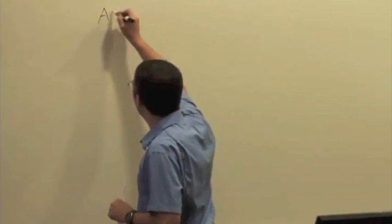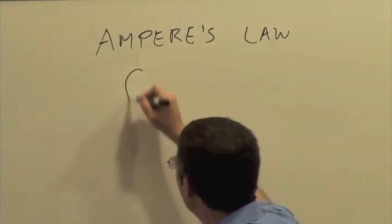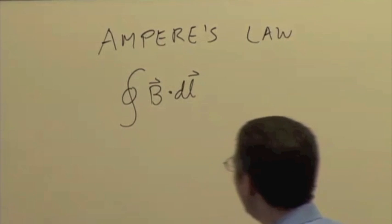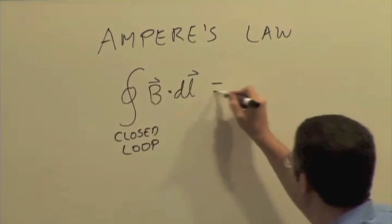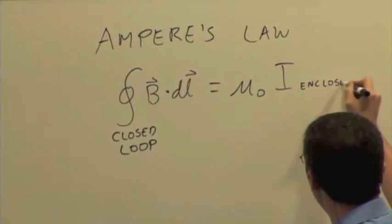I want to finish up Ampere's Law today, the last part of Chapter 22, and then hopefully we'll have time to start the next chapter. We introduced last time Ampere's Law as the path integral B dot DL over a closed loop being equal to mu naught times the enclosed conventional current.